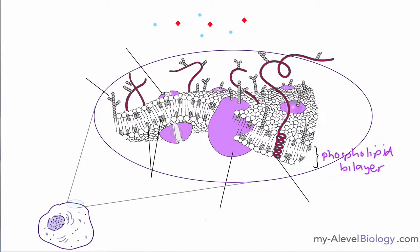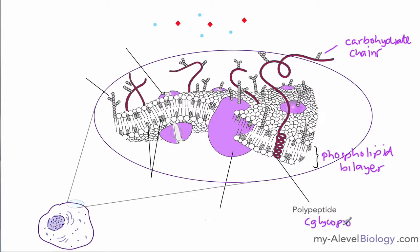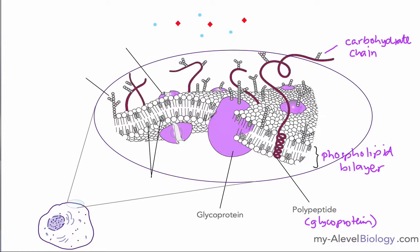Going around the diagram: we have a polypeptide chain — a chain of amino acids — that spans across the membrane and pokes out the other side. The little branches are carbohydrate chains. When a carbohydrate chain is attached to this polypeptide, we call it a glycoprotein, which basically means a protein with a carbohydrate chain attached. Moving around, we have another glycoprotein — this one is globular in nature and spans all the way across the membrane, which we call an intrinsic protein.